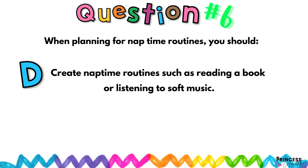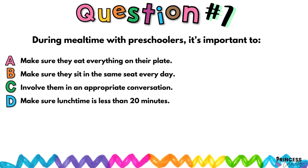Question number seven: During meal time with preschoolers, it is important to: A) Make sure they eat everything on their plate; B) Make sure they sit in the same seat every day; C) Involve them in appropriate conversation; D) Make sure lunch time is less than 20 minutes.